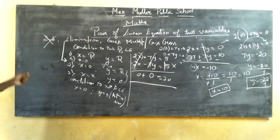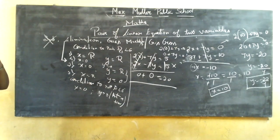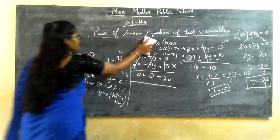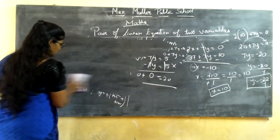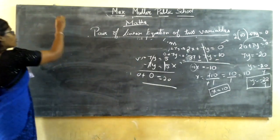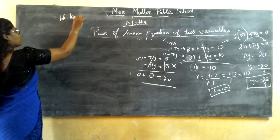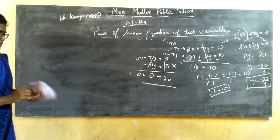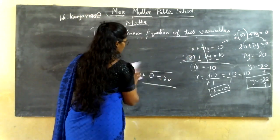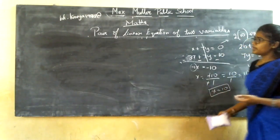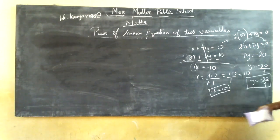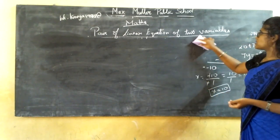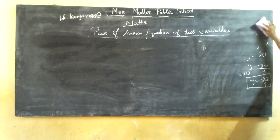This is what we learned in the previous class. Now we are going to draw a mind map regarding everything we have learned in the last two classes, solve a few sums, and wind up this chapter on pair of linear equations. In the next class, we will take a new chapter. If you have any doubts, you can mail me at bk.cavia1998@gmail.com, or write questions on paper and send a photo.